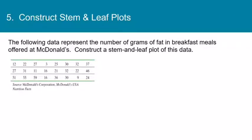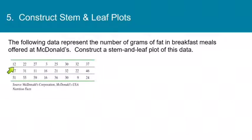Now I'm going to show you how to make your own stem and leaf plot. Let's create one for data representing the number of grams of fat in breakfast meals offered at McDonald's. We have 24 data values, all one or two digit numbers. The leaf in each value is the rightmost digit and the stem is any digits before that. So for 12, the leaf is 2 and the stem is 1. For 27, the leaf is 7 and the stem is 2.